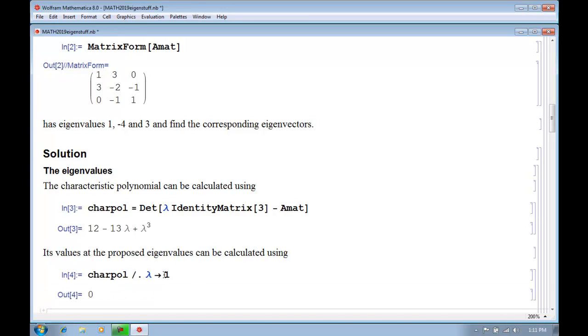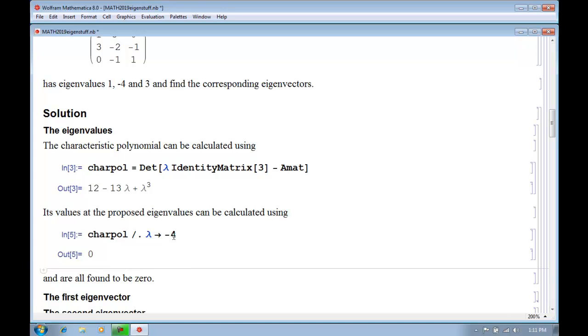And then the other two are negative 4, and we can check that that's an eigenvalue, because we get 0. And then finally, we can do lambda equals 3, and there we go. So they're all found to be 0. So that's the easy bit.